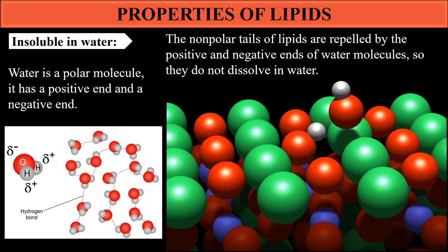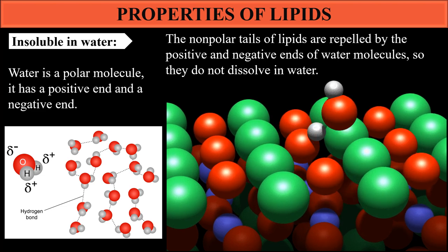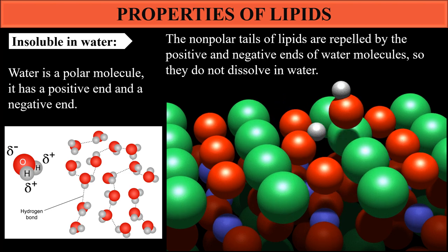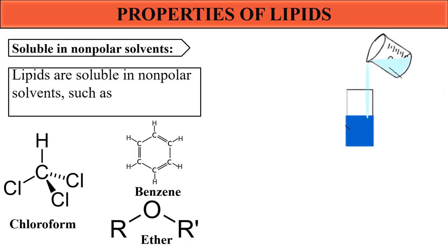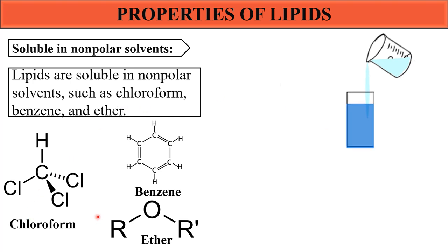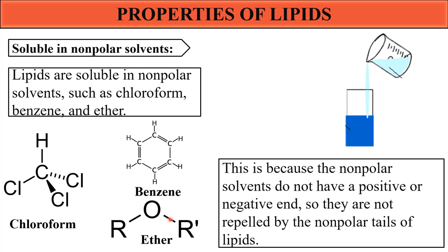In which solvents will lipids be soluble? Lipids will be soluble in non-polar solvents. Examples of non-polar solvents are chloroform, benzene, and ether. These non-polar molecules will not repel the non-polar lipids because non-polar solvents do not have positive or negative ends, so lipids are not repelled by their non-polar tails.